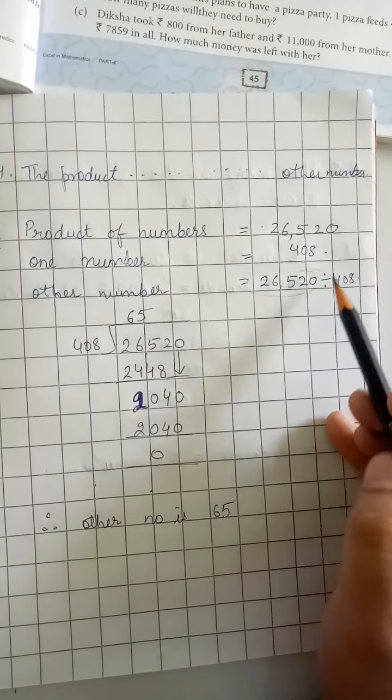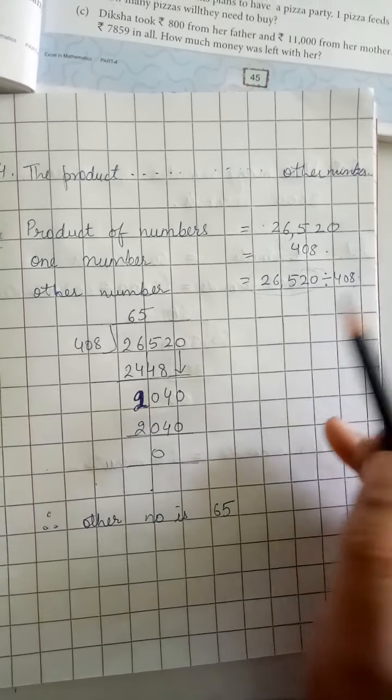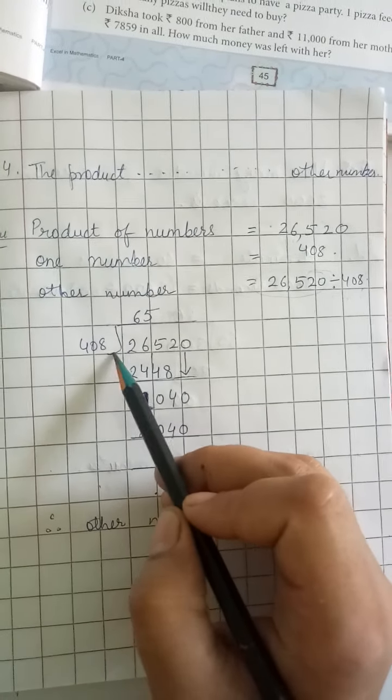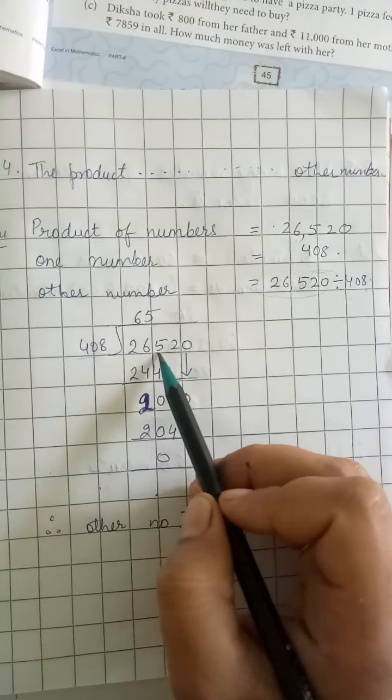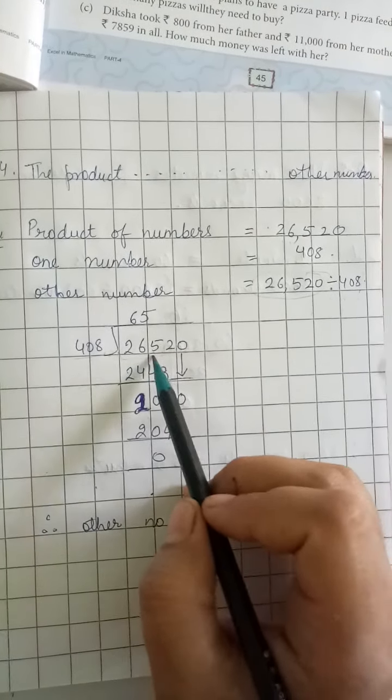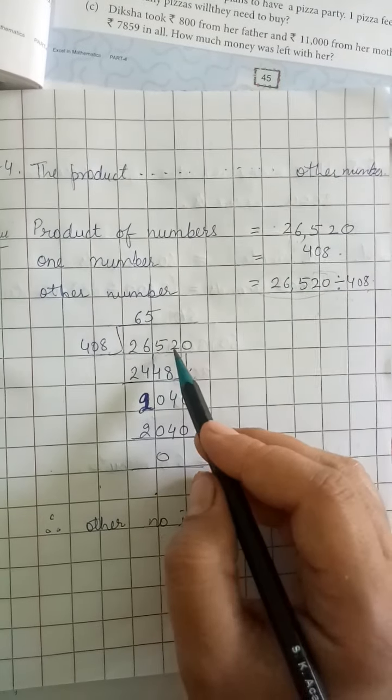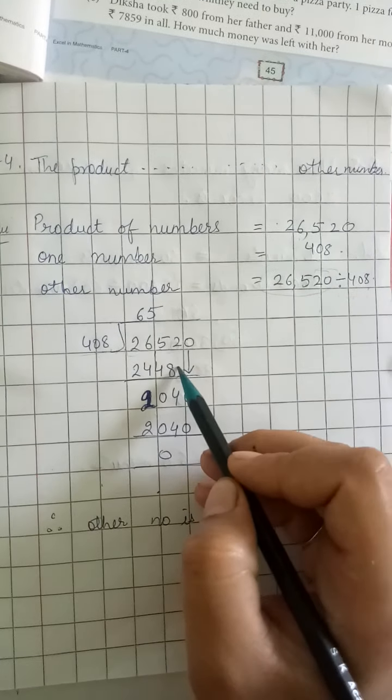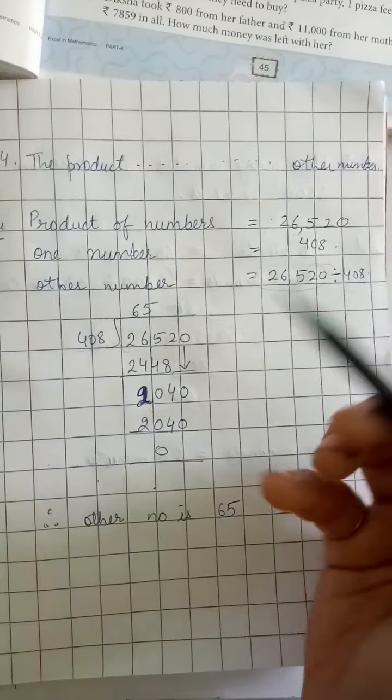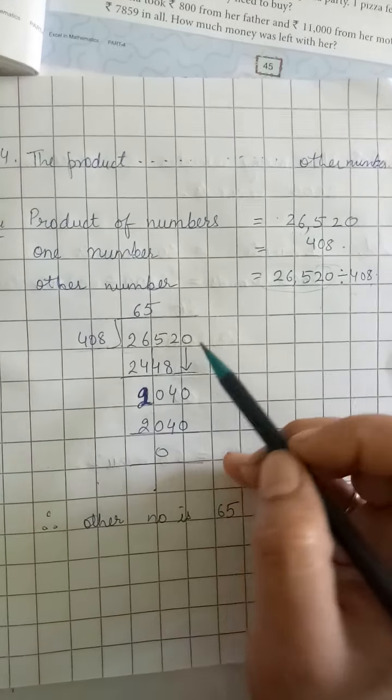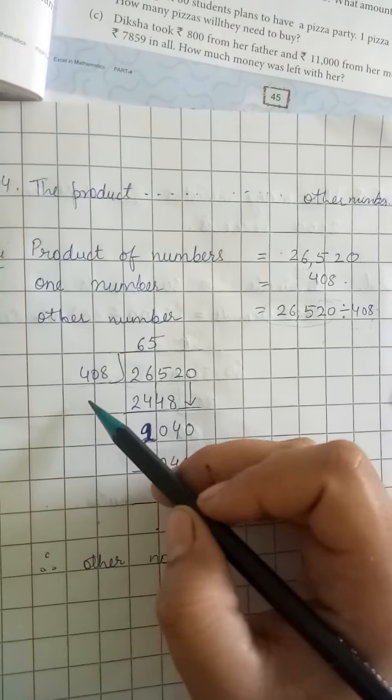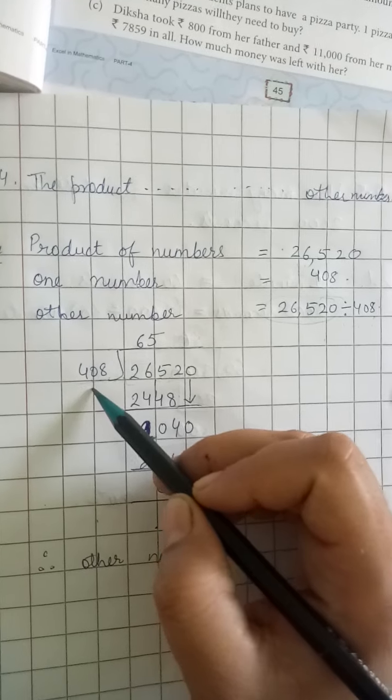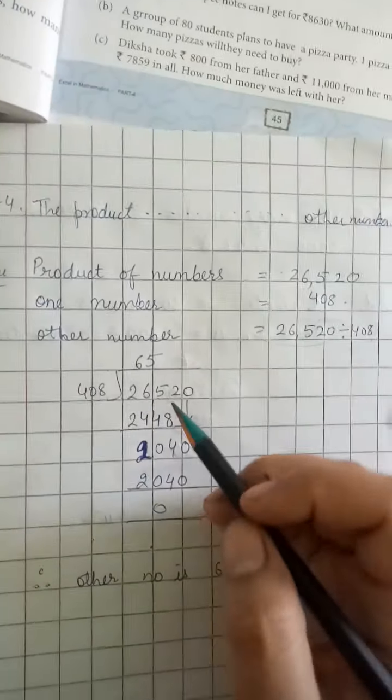Since it's a product, the product of two numbers divided by one number gives us the other. 408 is a three digit number, so we take three digits, but the first three digits are less than this number, so we have to take the fourth digit also. So we will write 0 here. We will divide the first four digits. We will count 4: 4 × 4 is 16, 4 × 5 is 20 (way less), 4 × 6 is 24.